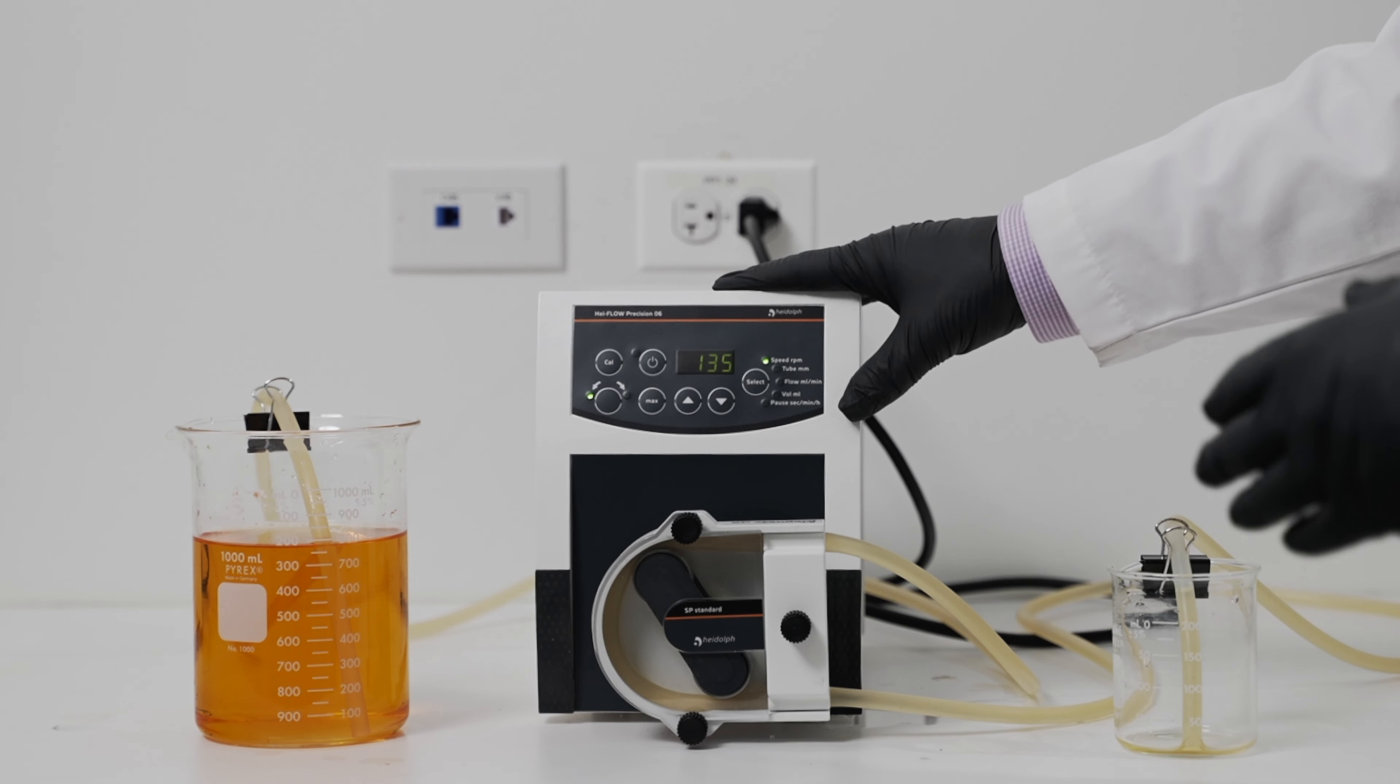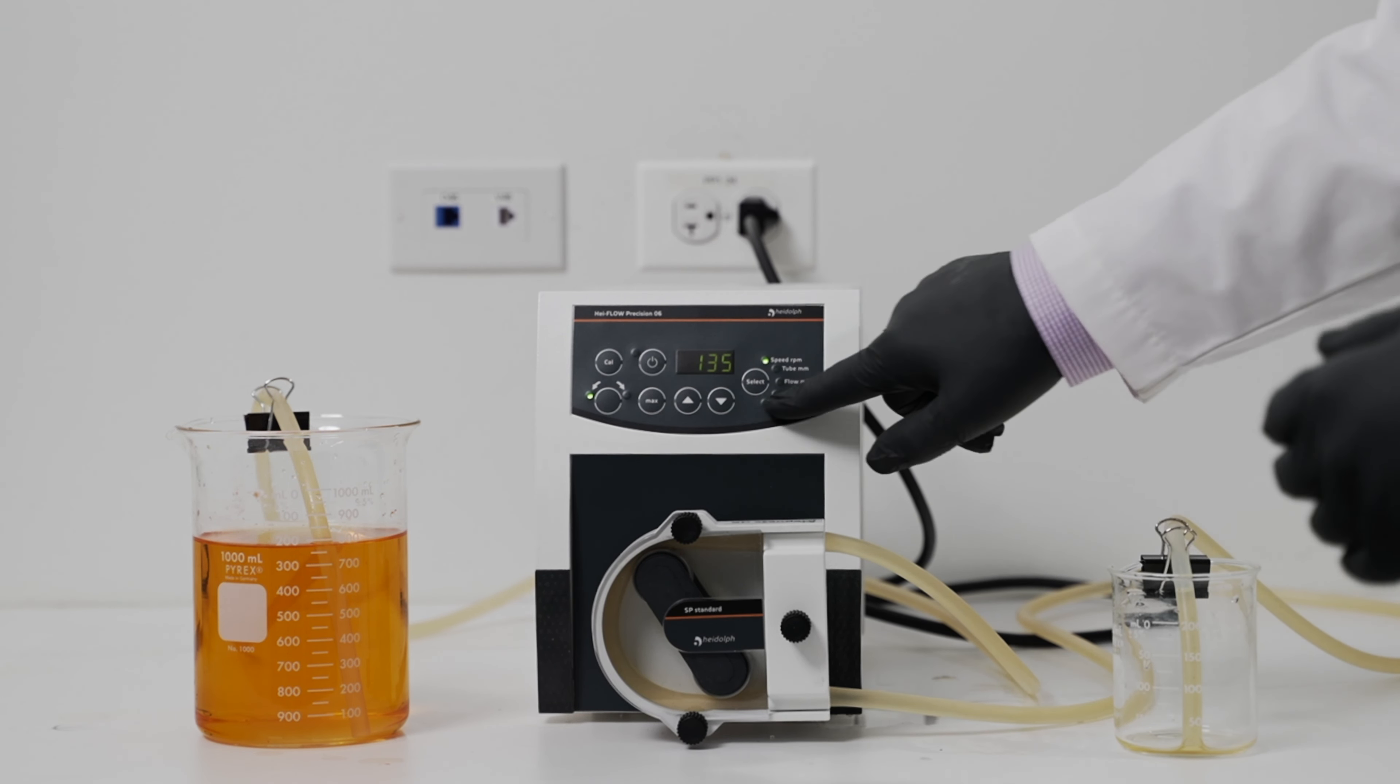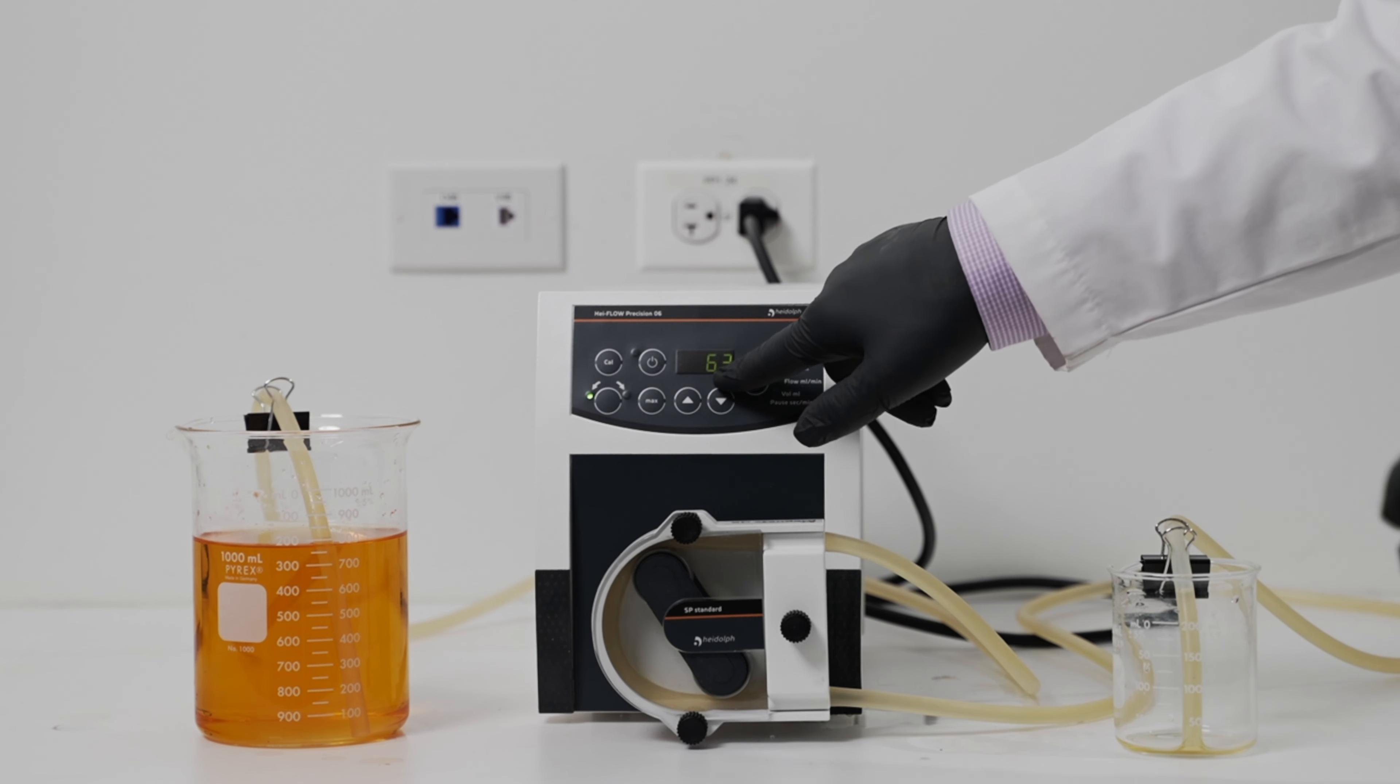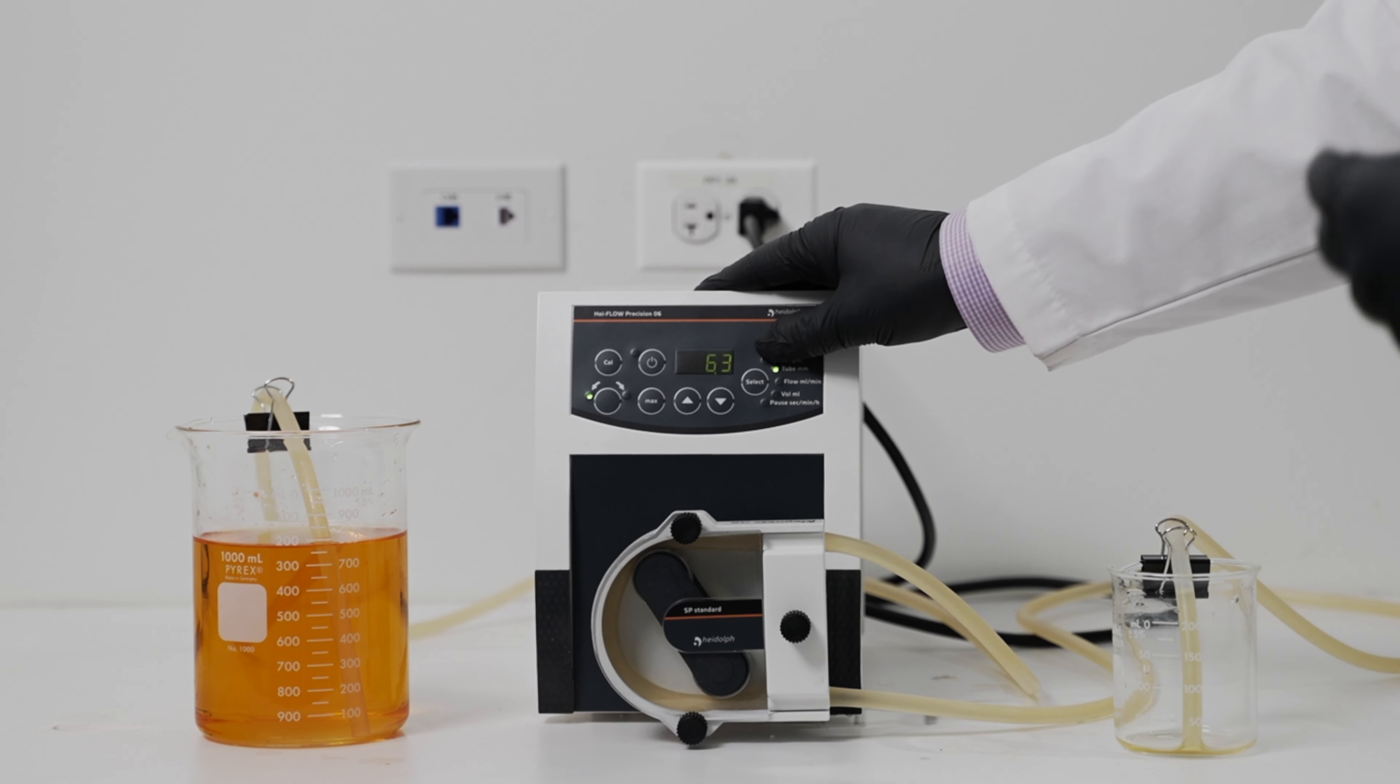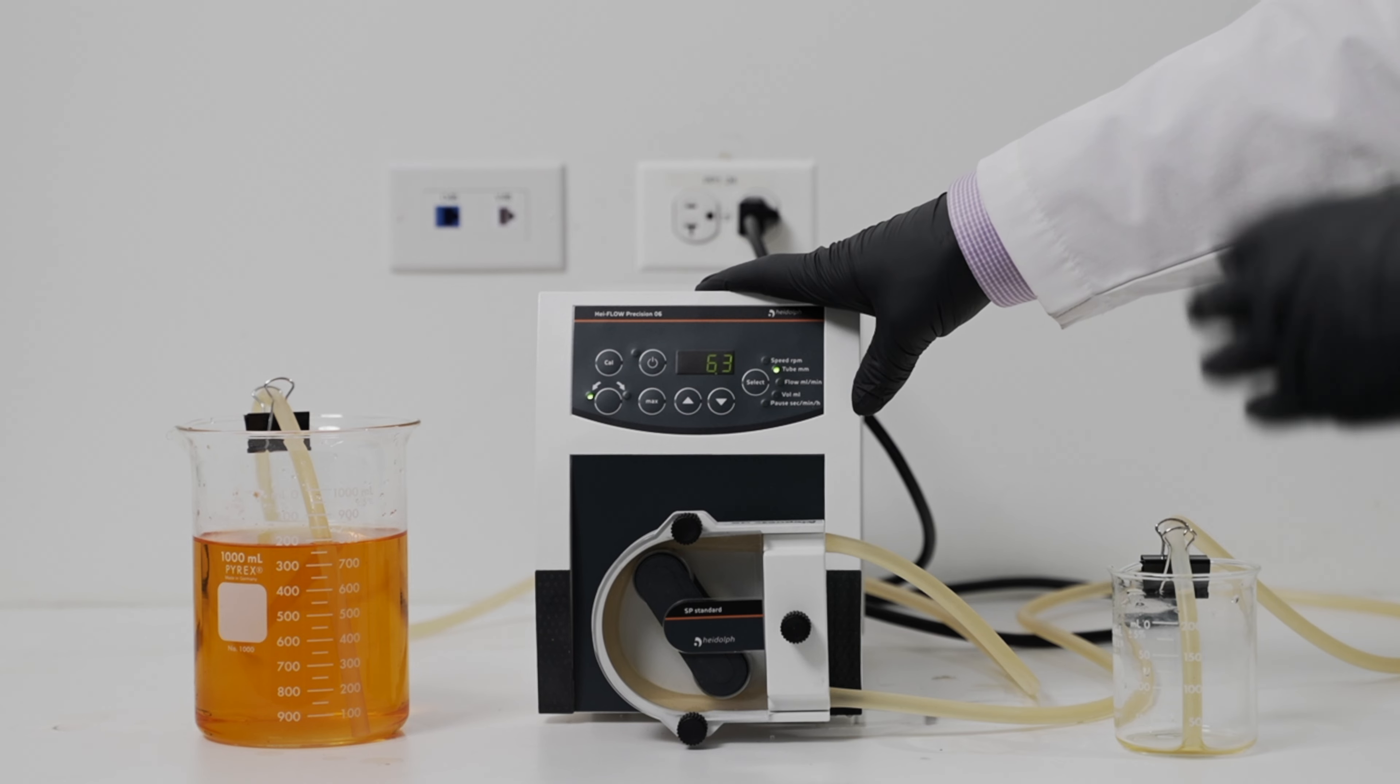The second will be to make sure that the tube size is set with your peristaltic pump. To do that, you can hit select once to go down to tube mm, where you'll see a tube size there. In our case, it is 6.3 millimeters, so we have that set. If the tube sizing is set incorrectly, you may notice some variance in the dosing of your volumes.